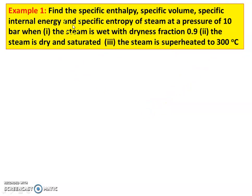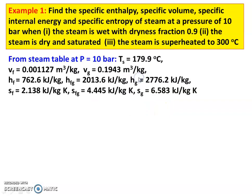We have to write down the given data. The given data: pressure is 10 bar. First condition — wet steam with dryness fraction 0.9. Second — dry saturated steam. Third — superheated steam, with superheated steam temperature given.